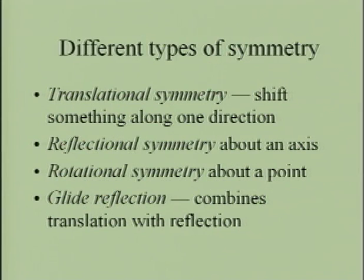Let's leave randomness because we want symmetry — the opposite of randomness. Translational symmetries represent a shift along one axis. A reflectional symmetry is something reflected about an axis — a mirror symmetry. A rotational symmetry rotates about a center point. I will also mention a combination of translation with reflection, which are glide reflections, well-known in the anthropological community.